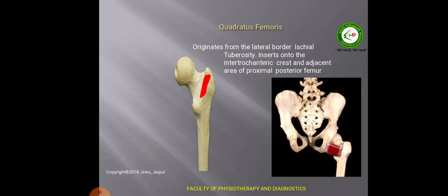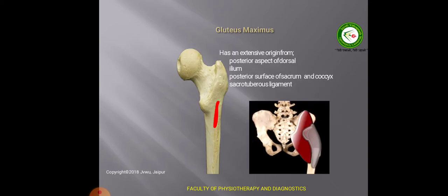The quadratus femoris originates from the lateral border of the ischial tuberosity and inserts on the intertrochanteric crest. On the intertrochanteric crest there is a tubercle known as the quadrate tubercle, where the insertion of quadratus femoris lies. It is quadrangular in shape, which is why it is named quadratus. The gluteus maximus inserts on the gluteal tuberosity, which is also known as the third trochanter of the femur.